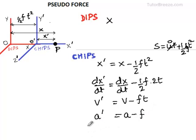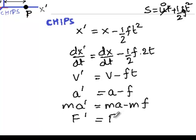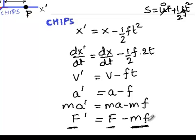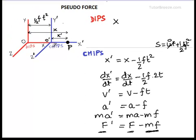Differentiating once more gives A' = A − F, since F is a constant and differentiating t gives 1. Multiplying by mass gives MA' = MA − MF, or F' = F − MF. So the force that Chips would measure is F − MF. There is a new force MF that appears, and this new force MF is called the pseudo force. Since Chips's coordinate system is accelerating with respect to Dibs, this extra term MF comes in, and Chips must correct his forces by this amount for Newton's laws to work for him.